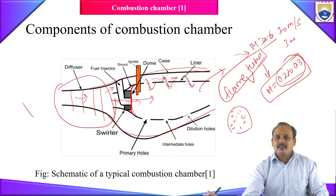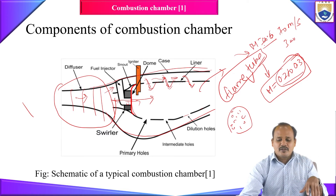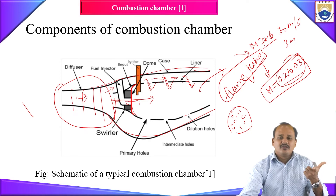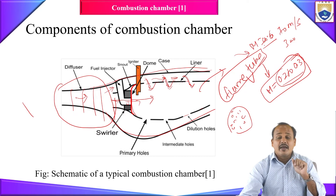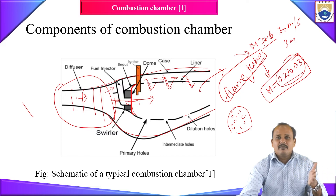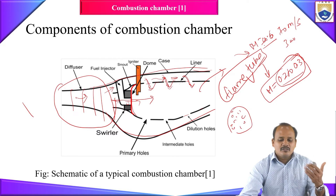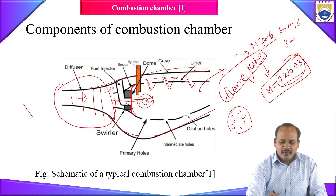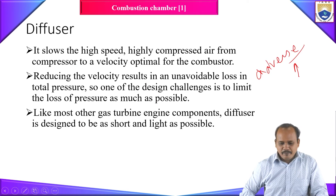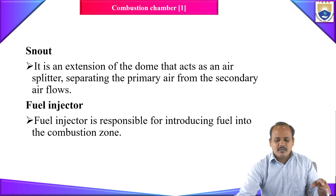The igniter functions similarly to a spark plug in a petrol engine — it initiates the combustion process. Unlike in petrol engines where the spark plug operates continuously, in a gas turbine engine the combustion is a self-sustained process. Once ignition is started, continuous sparking is not needed, because a portion of the high-temperature gas remains present inside the combustion chamber and acts as the ignition source for sustained combustion.